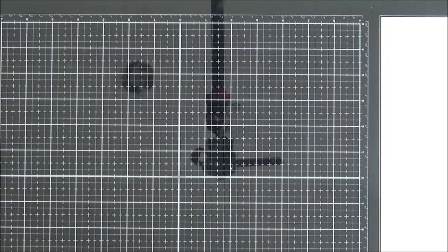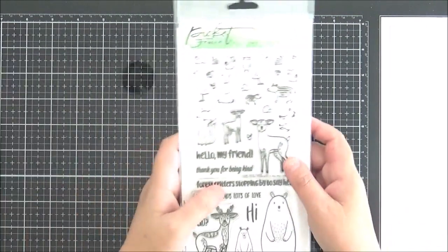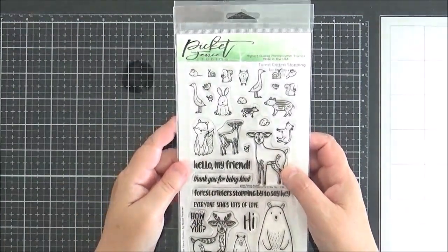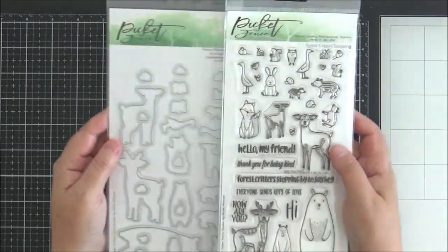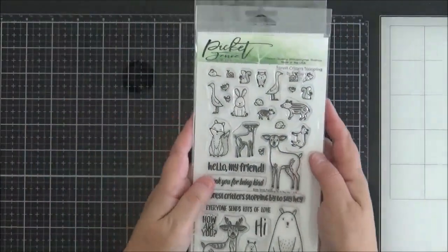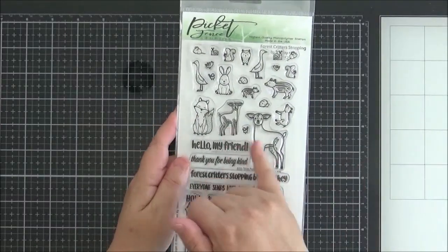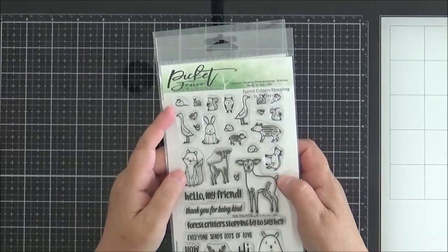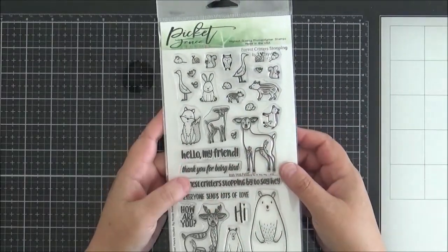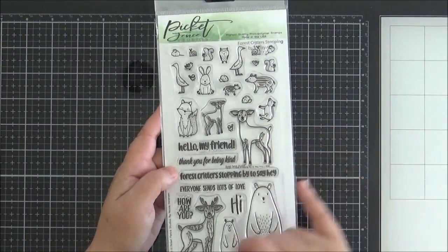Okay, so moving on from the sea, ocean themed items. The next one that I wanted to share with you is this set here. This is called Forest Critters Stopping By to Say Hey. It does have a coordinating die as well. You've got some deer, you've got a fox, an owl, squirrel, a mouse, and you've obviously got some sentiments included in there too.